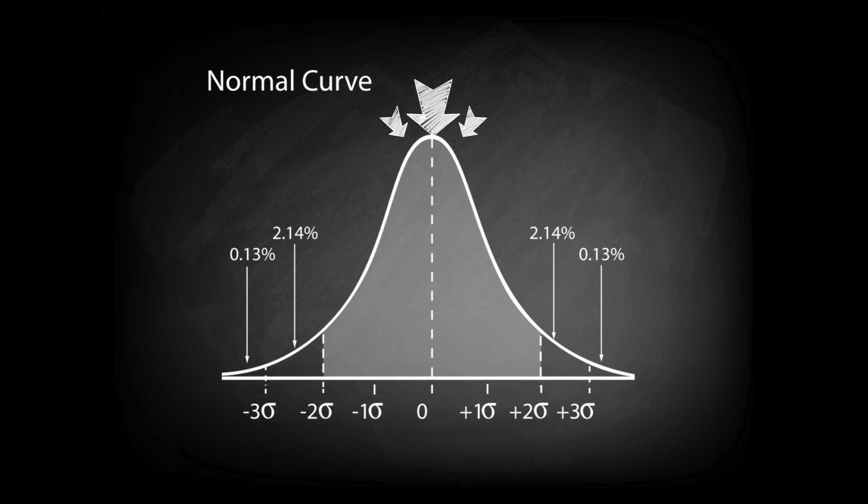A second useful property is that the mean, the mode and the median are all equal. So this central point that's the mean is also the mode and the median.